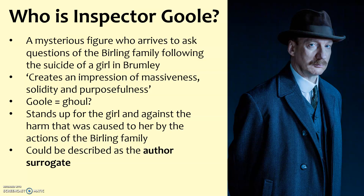He certainly stands up for the girl and against the harm caused to her throughout the play. He uses lots of emotive language and imagery to try and make the family feel guilty. He could also be described as the author surrogate — in simple terms, he could be like J.B. Priestley on stage. Priestley's ideas and his voice are put into the play through the character of Inspector Goole, though you should say it 'could be suggested' that he is the author surrogate.